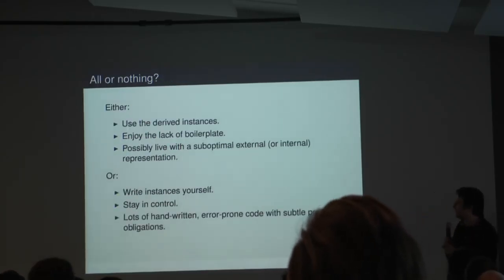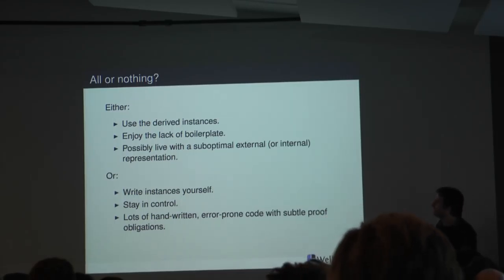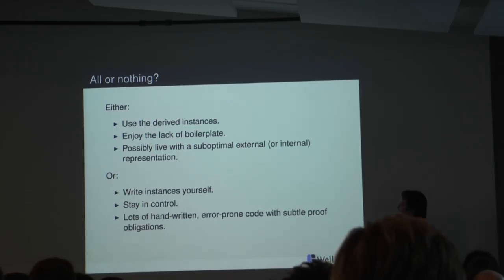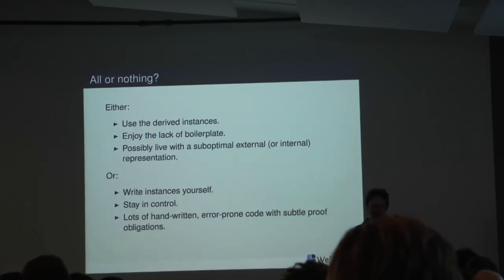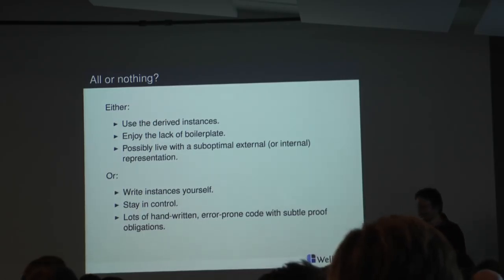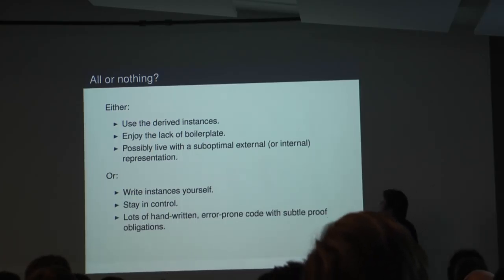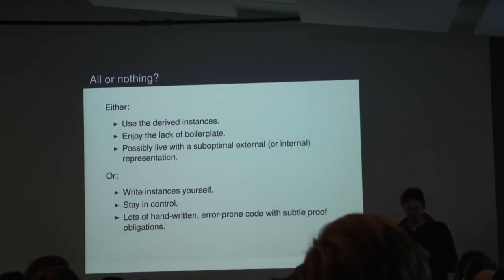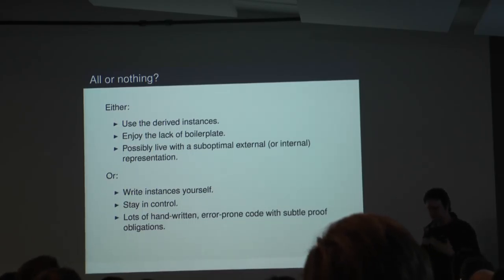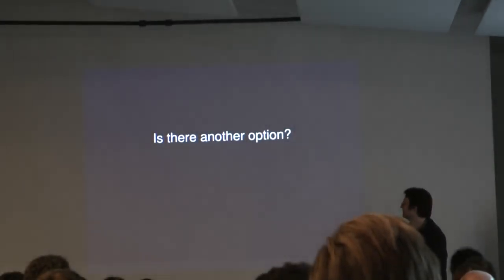So there seems to be a binary choice between two suboptimal options. Either we use derived instances and are happy we don't have to write boilerplate code, but we may live with fragile, changing, suboptimal external representations — you see people accepting that, or writing awkward Haskell data types just so the generic algorithm produces the right thing. Or we write all instances ourselves and stay in control, but then we have to write lots of code by hand, it's very error-prone, and there are subtle proof obligations that make you feel uncomfortable.